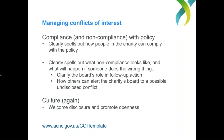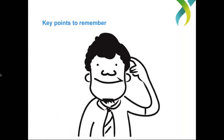Getting back to how a policy can be used to manage conflicts of interest — having a policy is great, but that policy also needs to be complied with. Your conflict of interest policy needs to explain what will happen if you don't comply with it. In our template policy on the ACNC website — there is a great conflict of interest policy template there, and also another one on the Our Community website — these are both great if you're looking for a starting point, and we will send you the links to those in the follow-up email.